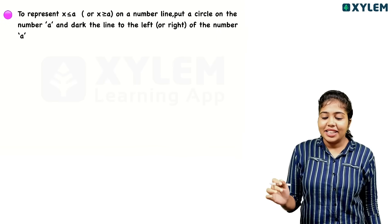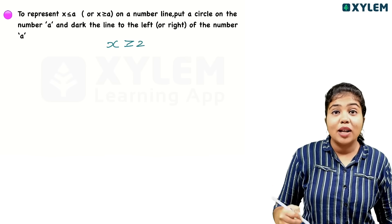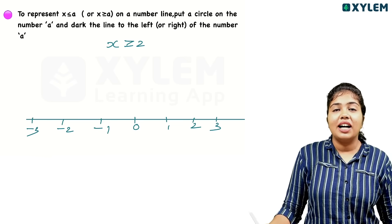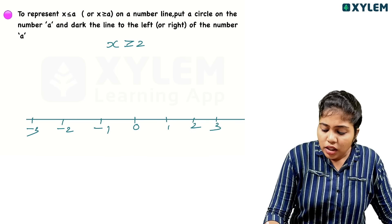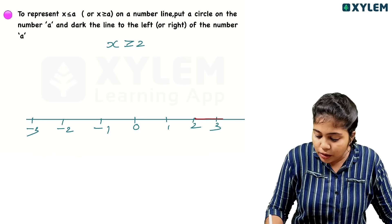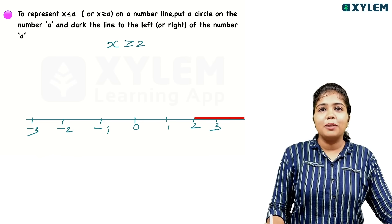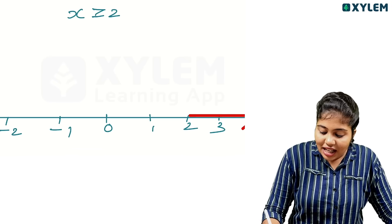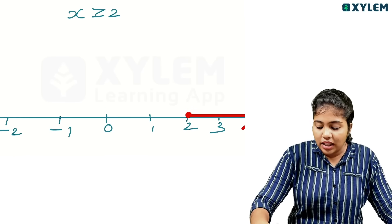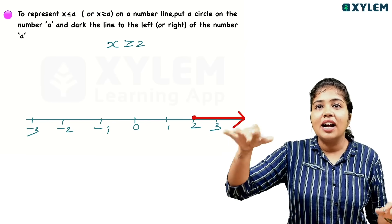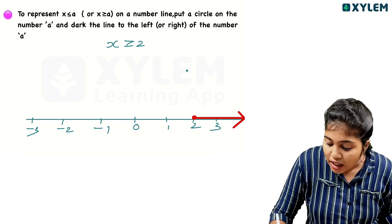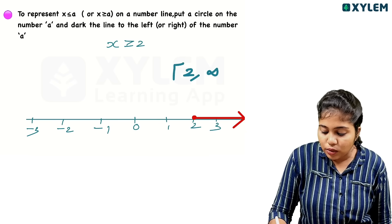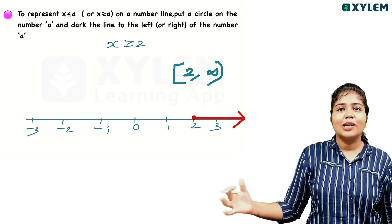The other case is x greater than or equal to 2. We mark points 0, 1, 2, 3 and minus 1, minus 2, minus 3. For x greater than or equal to 2, since 2 is included, we use a dark circle at 2. The arrow goes to the right. For the interval: greater than or equal to 2 means we use a closed bracket at 2 — closed bracket, 2 to infinity with an open bracket.